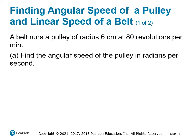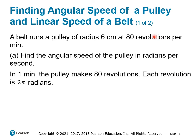A belt runs a pulley of radius 6 centimeters at 80 revolutions per minute. Nothing we've discussed yet has involved revolutions per minute — we've looked at linear speed and angular speed in radians over time. One revolution is one time around the circle, and the arc length for one full revolution is 2π radians. So if we go around 80 times per minute, in one minute the pulley makes 80 revolutions, and each revolution is 2π radians, giving us 160π radians per minute, which is an angular speed.